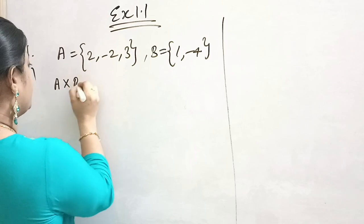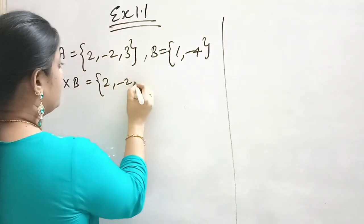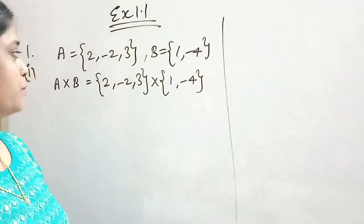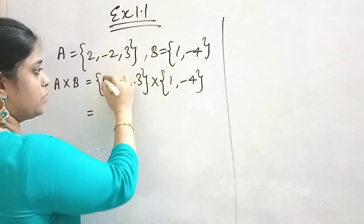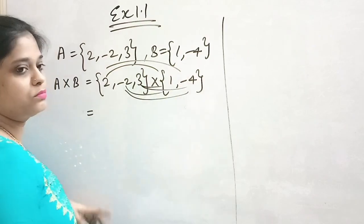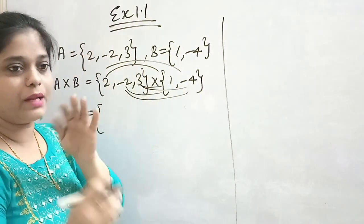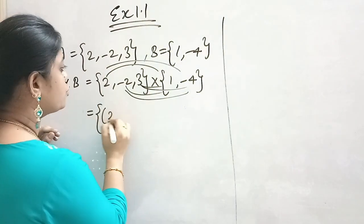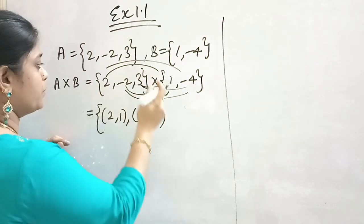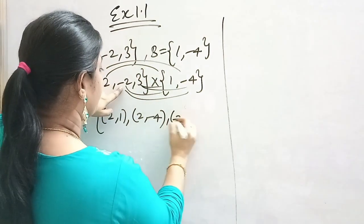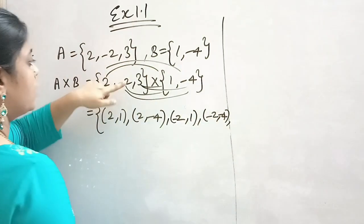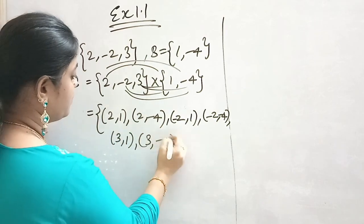So first we are calculating A cross B. Write your A set crossed with your B set. The ordered pairs are: (2, 1), (2, -4), (-2, 1), (-2, -4), (3, 1), (3, -4). The first number from A comes first, the second number from B comes next in each ordered pair.